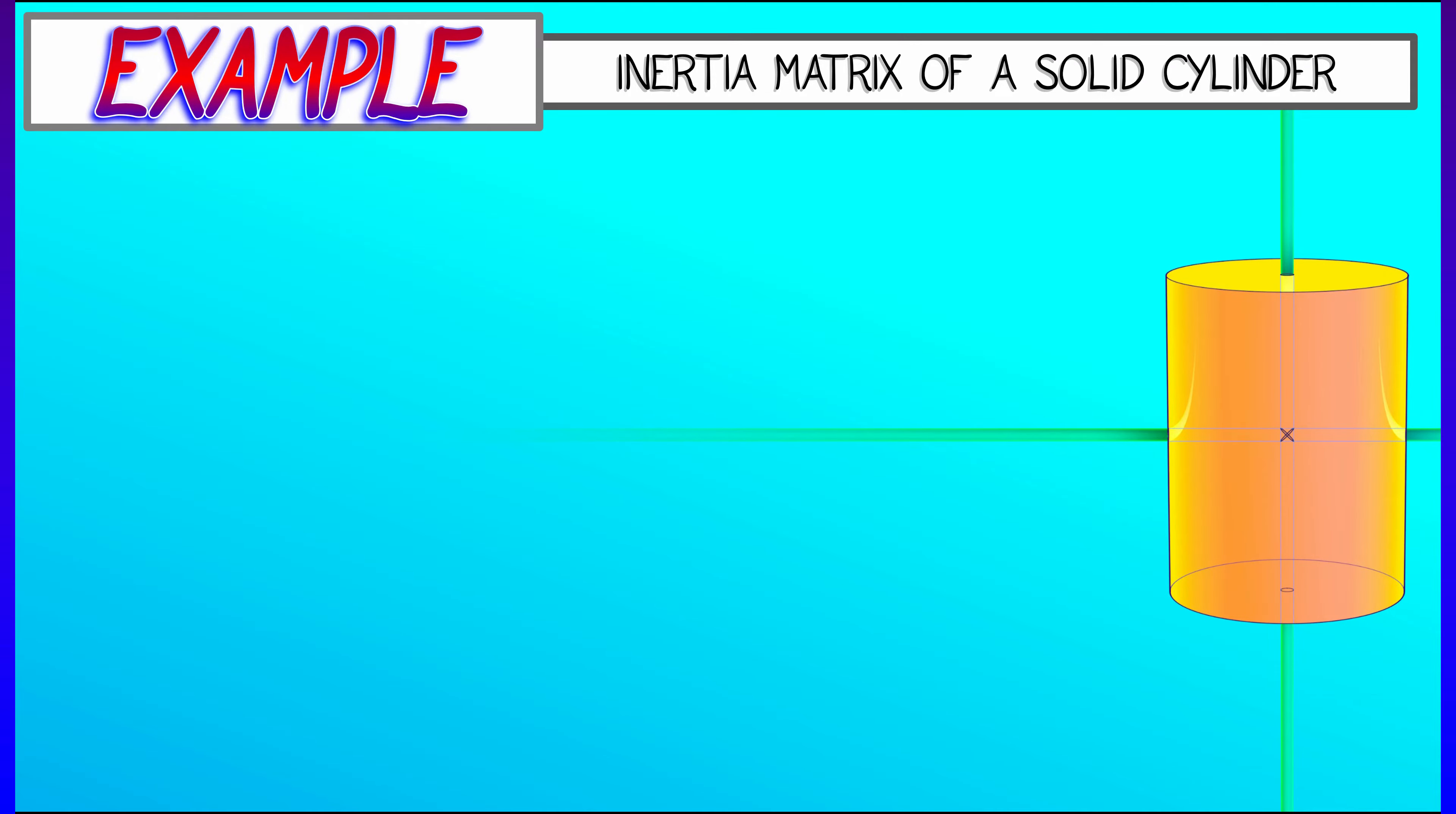Let's do an example involving cylindrical coordinates in the context of an inertia matrix. Let's say we have a solid cylinder, unit density, and mass m.